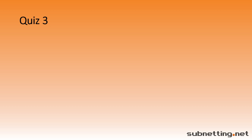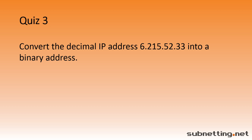Here's another quiz. Convert the decimal IP address 6.215.52.33 into a binary address. You can pause the video now to give yourself time to figure it out. The answer is as shown. If you didn't get it right, you could practice by picking random numbers between 0 and 255, and using a calculator to check your answer for each octet.